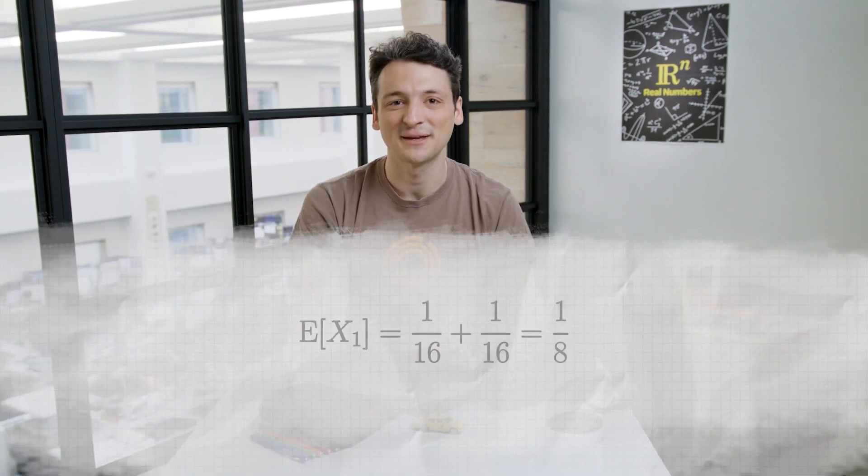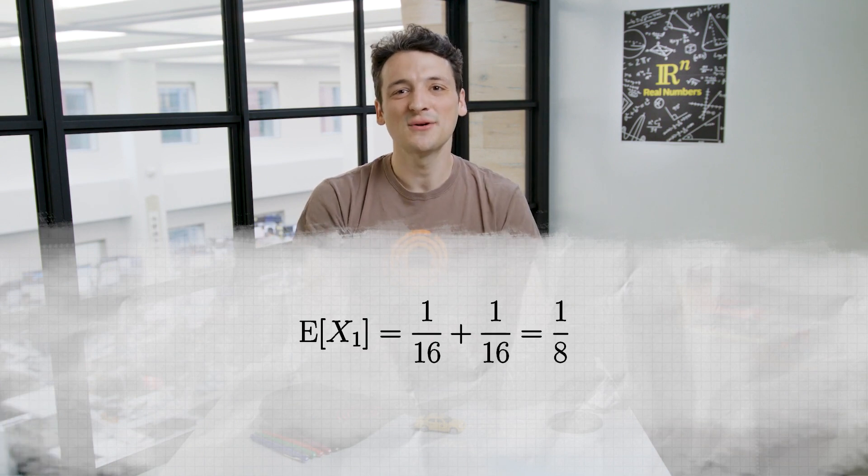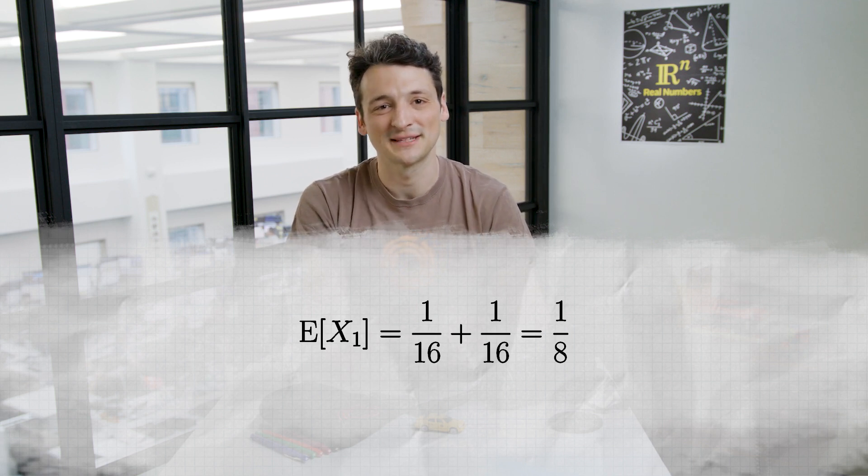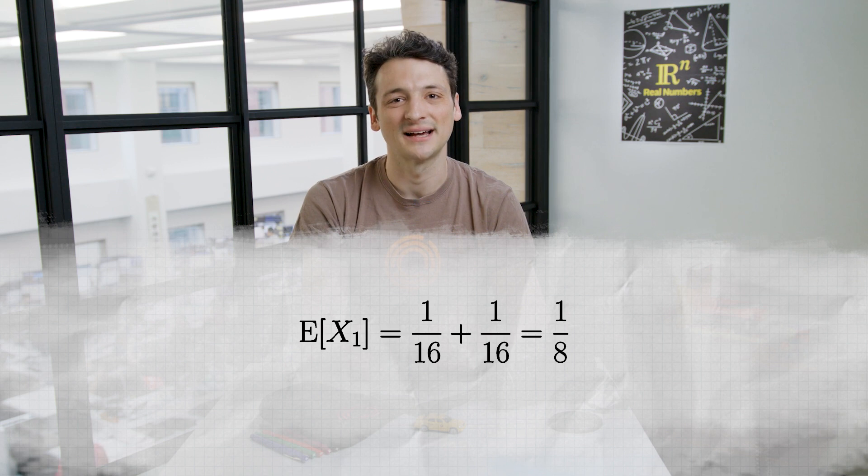So the expected value of x sub 1 is 1 sixteenth plus 1 sixteenth, or 1 eighth. Notice that there was nothing special about the first row of the parade, so the expected value of x sub i equals 1 eighth for all i, 1 to 10.